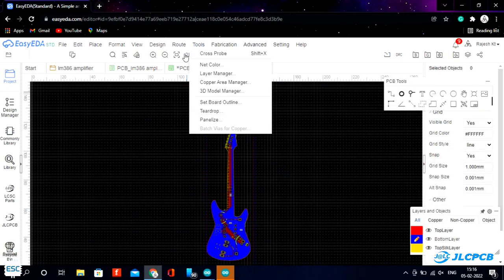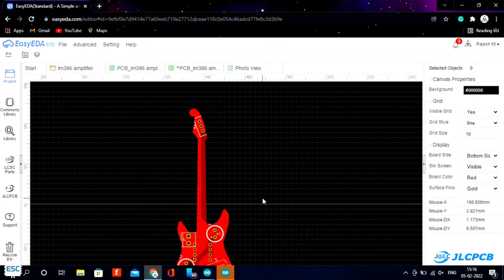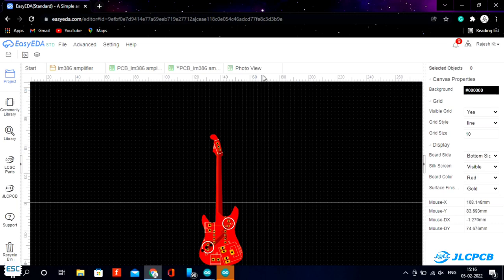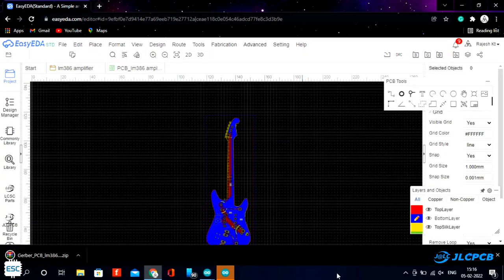After completing the drawing, the PCB looks like this. Now I generated and downloaded the gerber files for PCB fabrication.